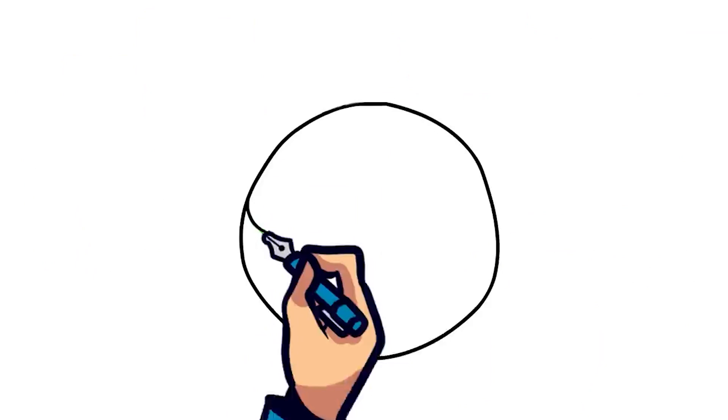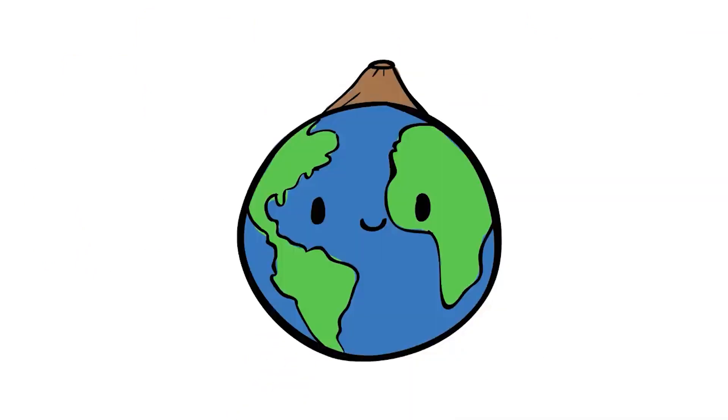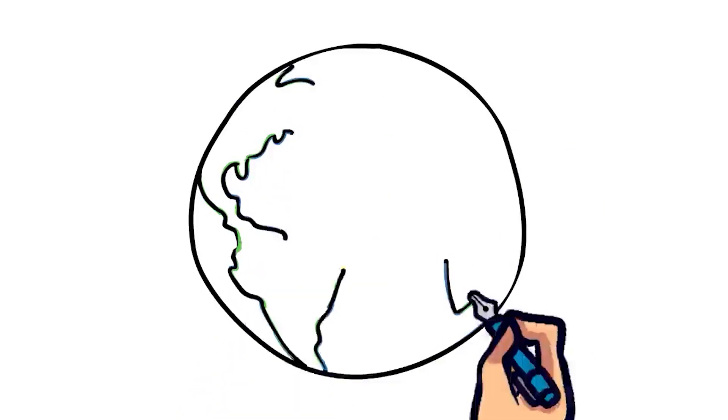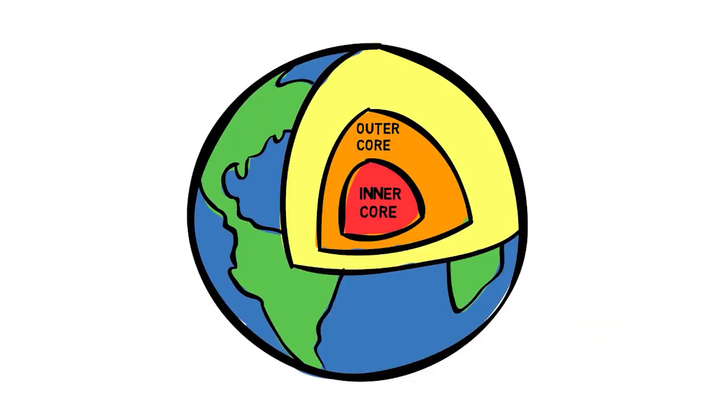To understand how a volcano erupts, we'll first need to take a look at the structure of the Earth. Earth has different layers, which include the inner and outer core, the mantle, and the crust.